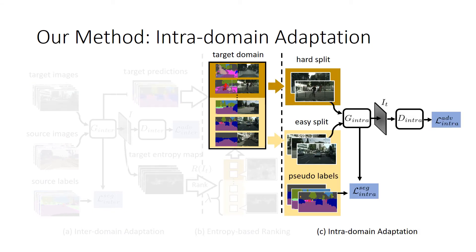The third step is the intra-domain adaptation, which consists of an intra-domain generator and discriminator. To align the intra-domain gap, we propose to utilize easy-split predictions from the inter-domain generator as pseudo-labels. We train the generator and discriminator in the same way as in the inter-domain adaptation part.